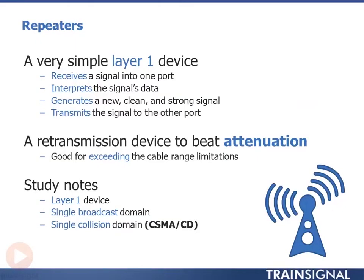First we'll talk about repeaters. This is a very simple layer one device — layer one being the physical media — and it does kind of four things: first it receives signal into a port, it interprets the signal's data, basically reads the zeros and ones, it then regenerates a new clean strong signal at the other side, and transmits the signal to the other port.